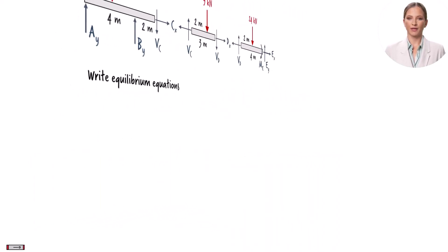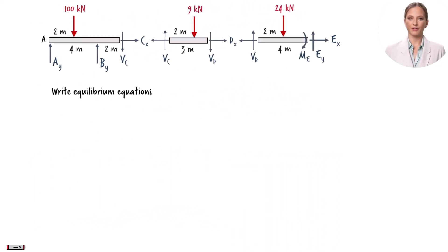We are now ready to write the three equilibrium equations for each beam segment. The sum of the forces in the x direction, the sum of the forces in the y direction, and the sum of the moments about the z-axis must be zero. The equilibrium equations for the left segment are...